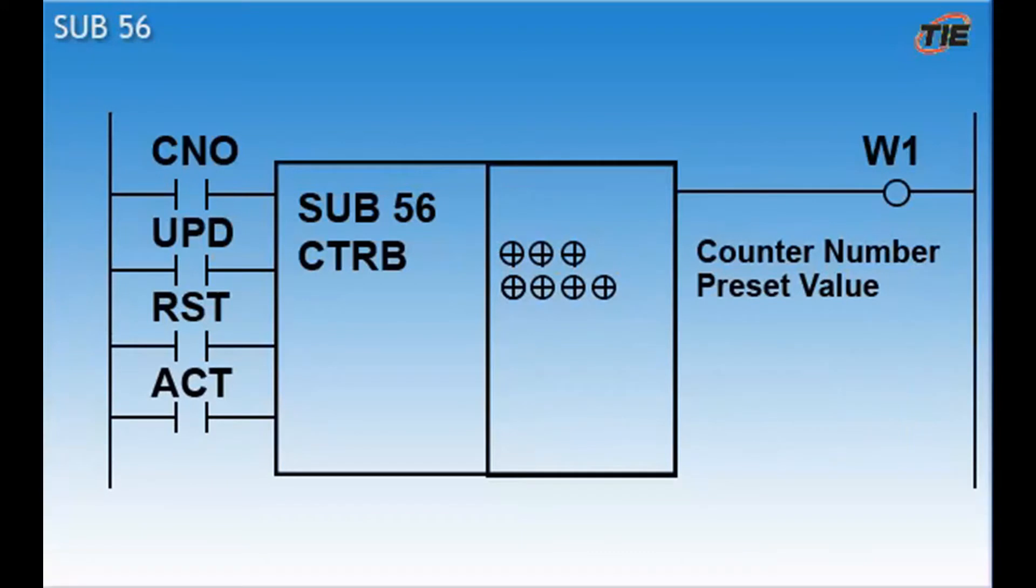The next counter we're going to discuss is the fixed counter. All the settings on this counter behave just like the CTR counter. The difference is that the preset count value is hard coded into the ladder. This is comparable to the difference between the variable timer TMR and the fixed timer TMRB. You can't change the value unless you edit the ladder.